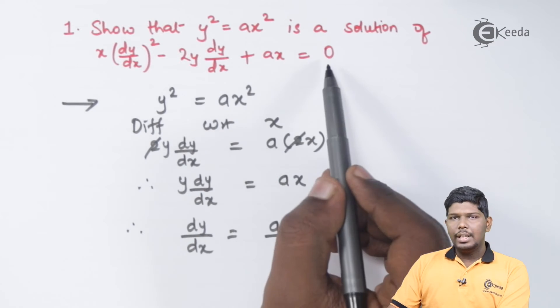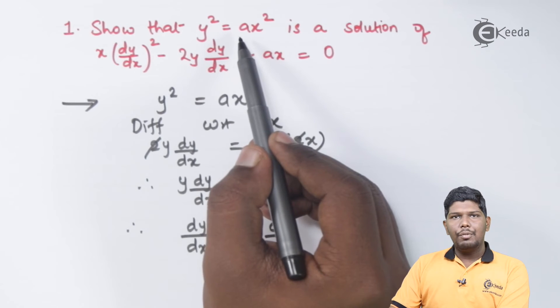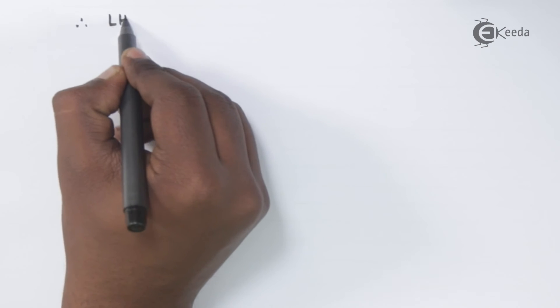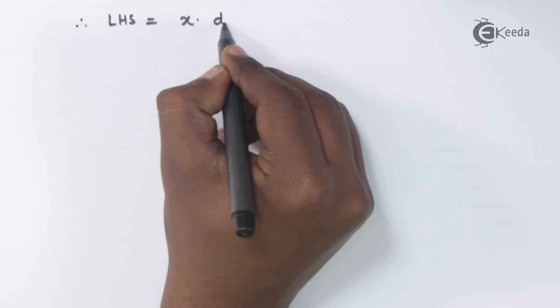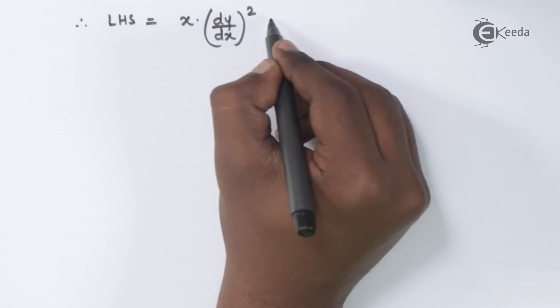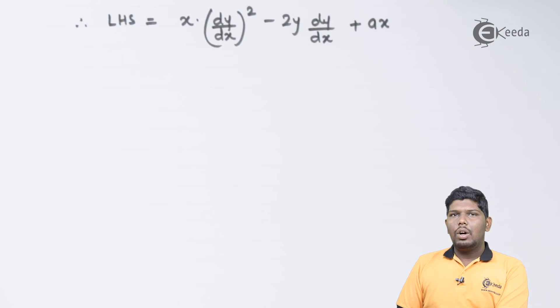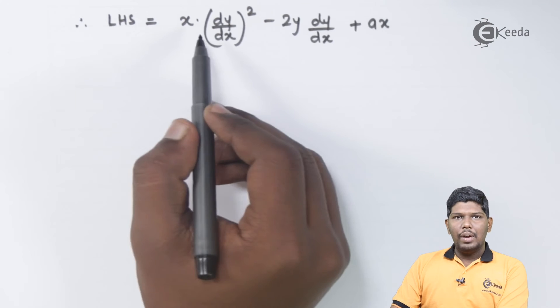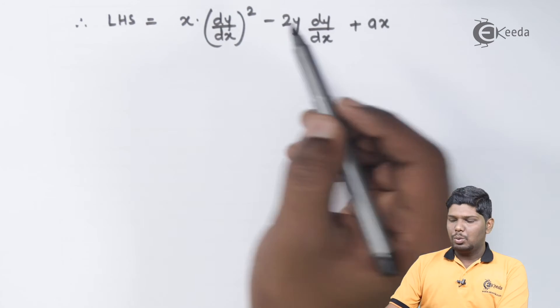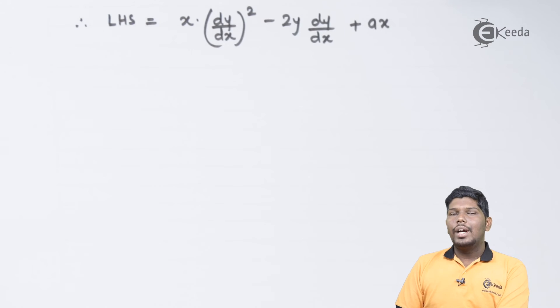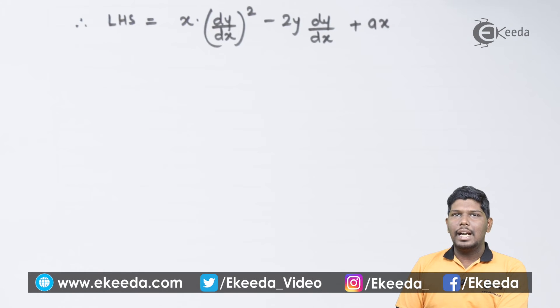On solving it, if we get 0, it means the differential equation of this equation is correct. So in the left hand side of the differential equation we have x(dy/dx)² - 2y(dy/dx) + ax. Now let us substitute the value of dy/dx that we have obtained. It was ax/y.